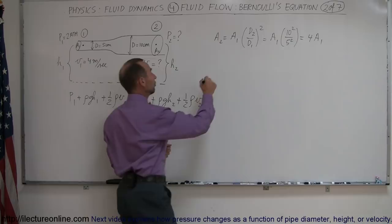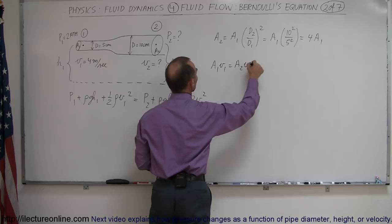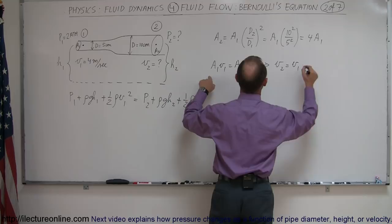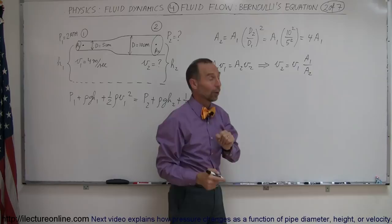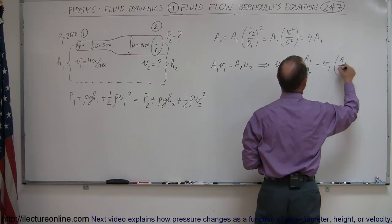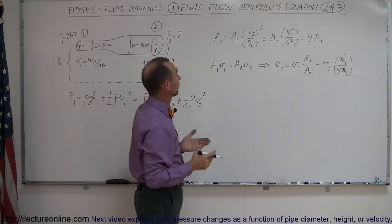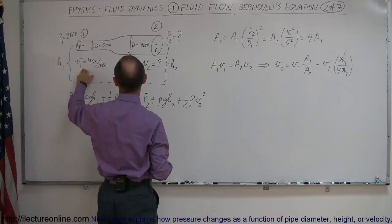Because we could say that A1 V1 is equal to A2 V2, that then implies that V2 is equal to V1 times A1 over A2. Now, since A2 is 4 times as big as A1, we could say this is equal to V1 times A1 divided by 4 times A1. This cancels out, and so now we can see that V2 is 1 quarter of V1.